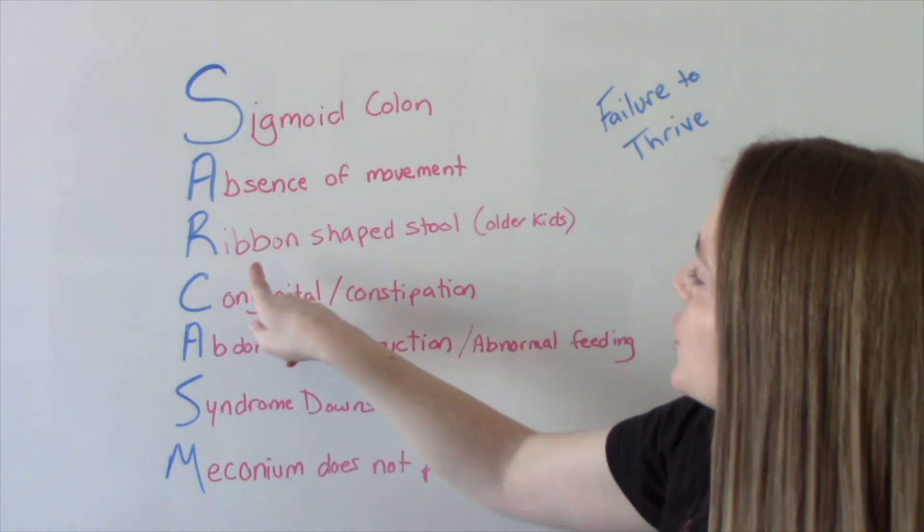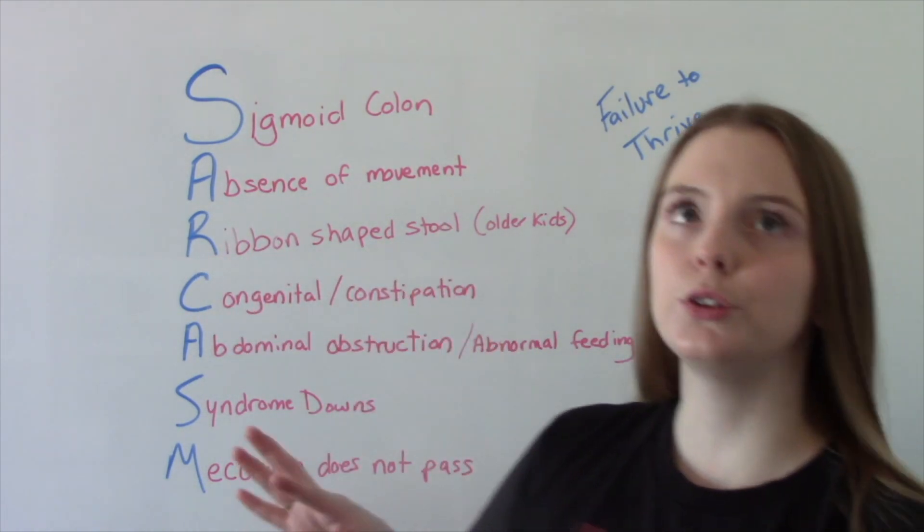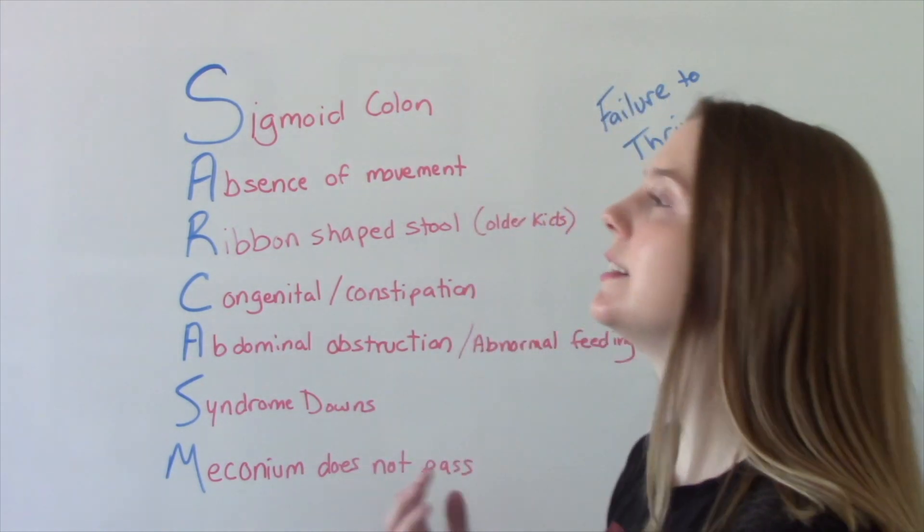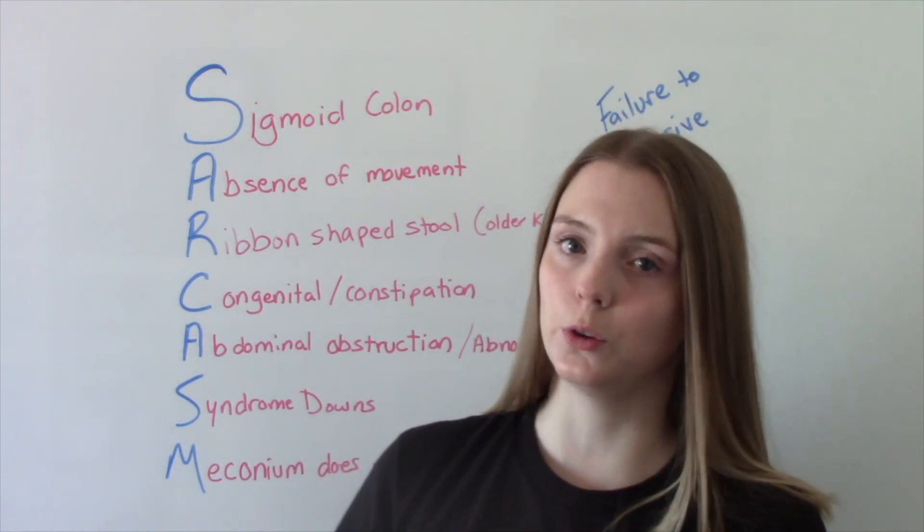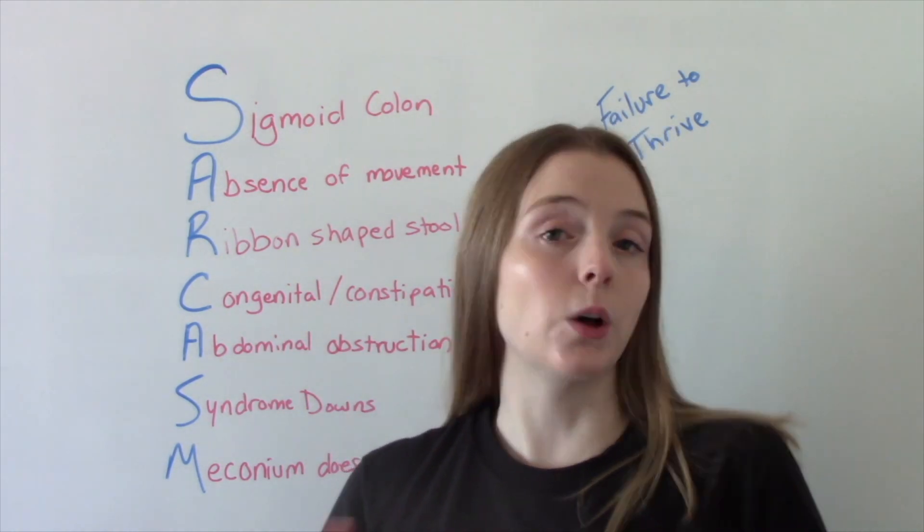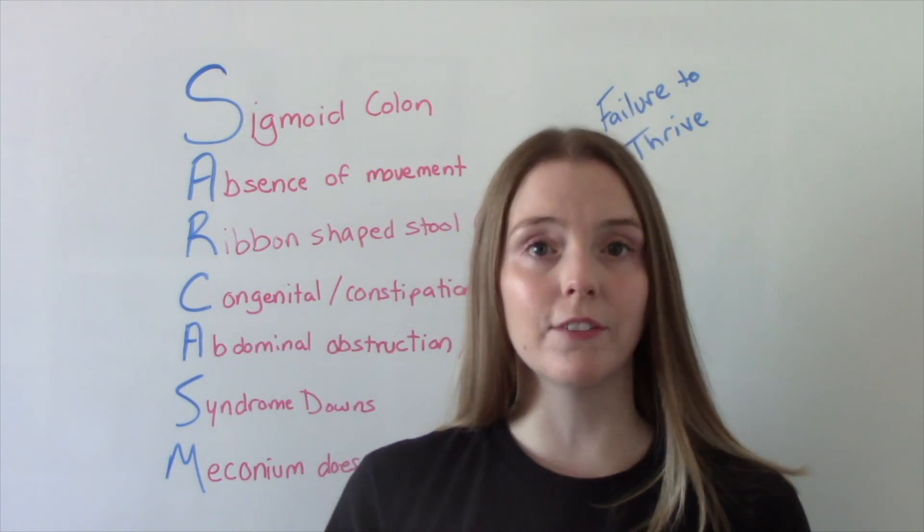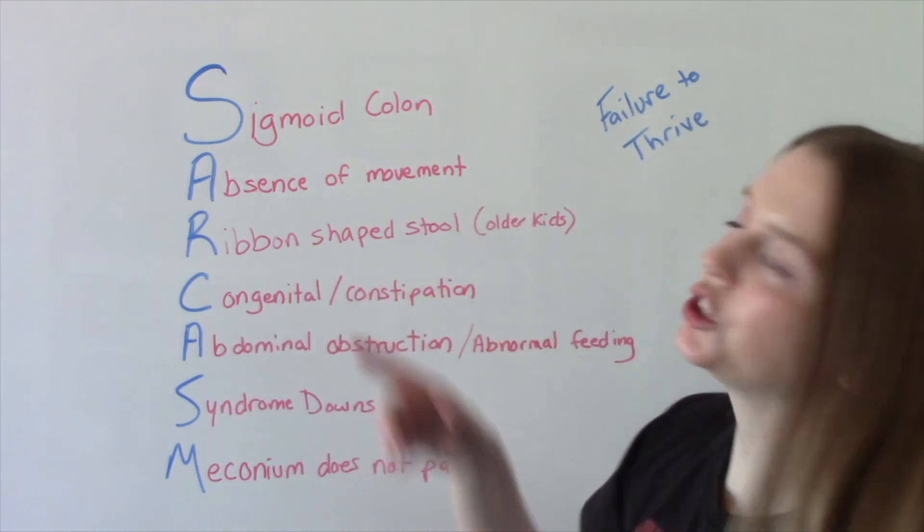R is for ribbon-shaped stool. This usually occurs in the older child. So typically, this is something we notice right away in newborns, but if we catch it in the older child, the biggest symptom they have is chronic constipation, and when they do have a bowel movement, they have ribbon-shaped stool.